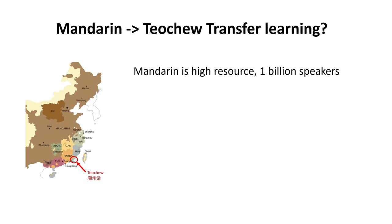Our goal is to do transfer learning from Mandarin Chinese to Diaoju, because Mandarin is a high-resource language with about 1 billion speakers — about a hundred times more people speak Mandarin than Diaoju. It is also a language that Whisper already can recognize pretty well. So let's examine linguistically whether it makes sense to do transfer learning from Mandarin to Diaoju.